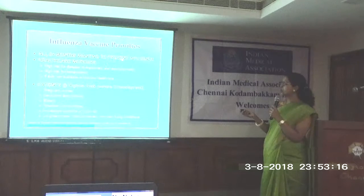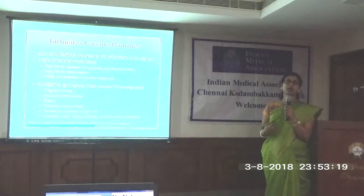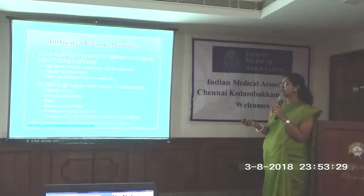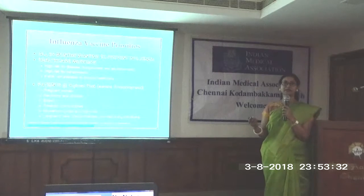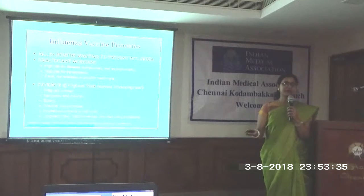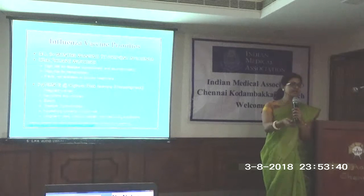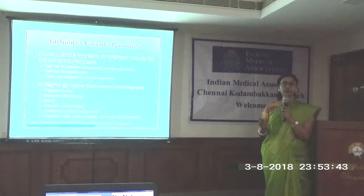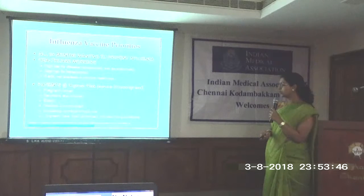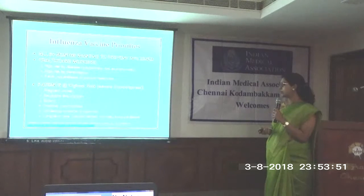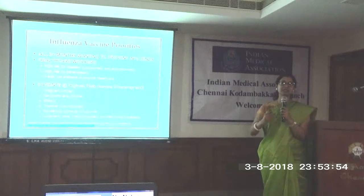Priority for influenza vaccination goes to: all individuals above six months wanting to prevent influenza, healthcare workers who tend to get infection and must be vaccinated themselves, high-risk people like pregnant women, newborns and children, the elderly, and those with medical comorbidities like diabetes. Household contacts of high-risk patients — such as a maid caring for an immunosuppressed person at home — should also be vaccinated to prevent cross-infection.